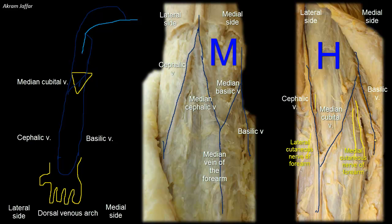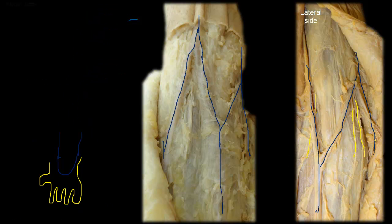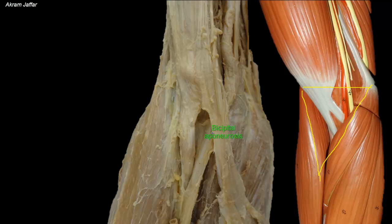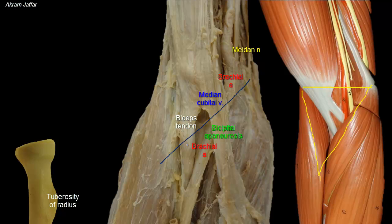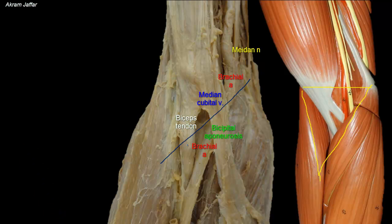The deep fascia of the roof of the cubital fossa is strengthened medially by the bicipital aponeurosis. The aponeurosis separates the superficial veins — particularly the median cubital vein — from the brachial artery and the median nerve, which are located underneath it. The bicipital aponeurosis is a medial expansion of the biceps tendon, considered a thickening of the deep fascia; the biceps tendon partly attaches to the deep fascia of the forearm but mainly to the tuberosity of the radius. This separation means that a clumsy venipuncture can pierce the fascia and the artery, producing a large expanding hematoma.